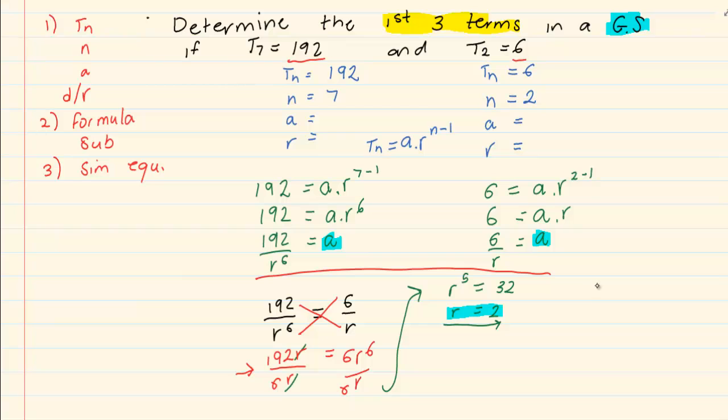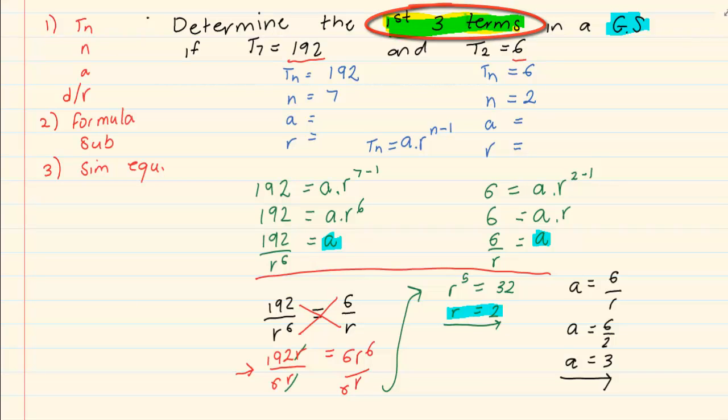Now, we have that A is equal to 6 over R, which is equal to 6 over 2. Therefore, A is equal to 3. But you need to go back and check, did you answer the question? It says, determine the first three terms.